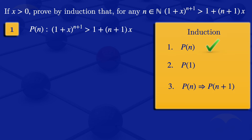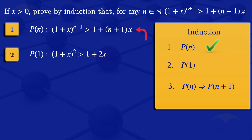I now move on to the second part: proving the base case. Our base case is P(1), since we are looking at natural numbers and we start at n equals 1. Substituting n equals 1 wherever we have n, we get 1 plus x squared is greater than 1 plus 2x.